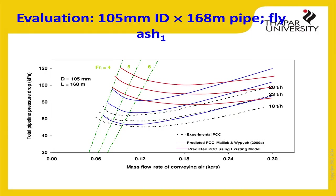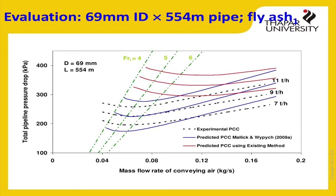For one pipe diameter and then scaling up to a longer pipeline, the red predictions using the existing method are superimposed against the blue predictions from our new model. The blue predicted conveying characteristics and the black experimental ones are going hand in hand — yes, there are still certain deviations, but it is much better compared to the red ones. They are following the right trend and the right values.